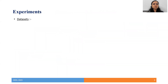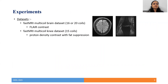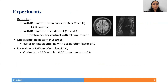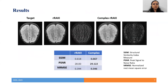For our experiments, we used two datasets and utilized Cartesian under-sampling at an acceleration factor of 5. For training the models, we used stochastic gradient descent, and the loss function is the sum of the L2 norms of the distances between the target and the non-linear path and the linear path. On standard metrics — SSIM, PSNR, and NRMSE — complex RRaK is outperforming RRaK.